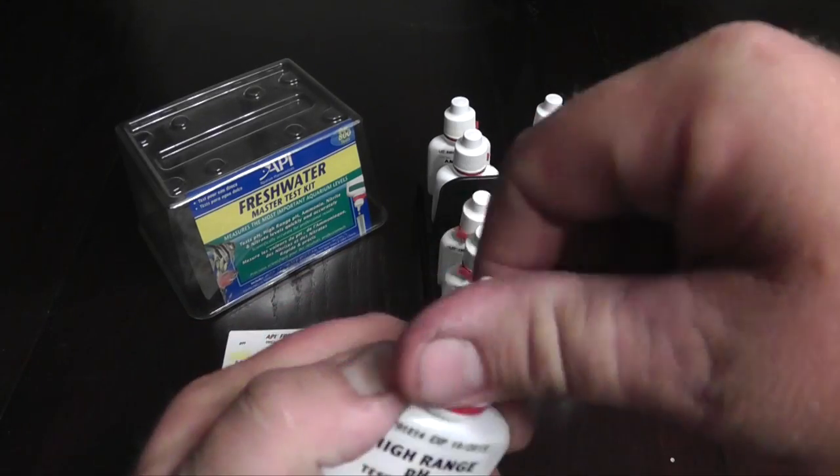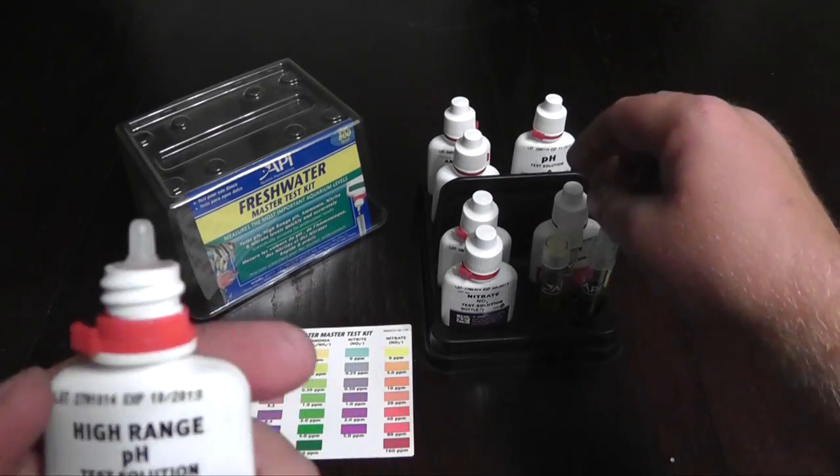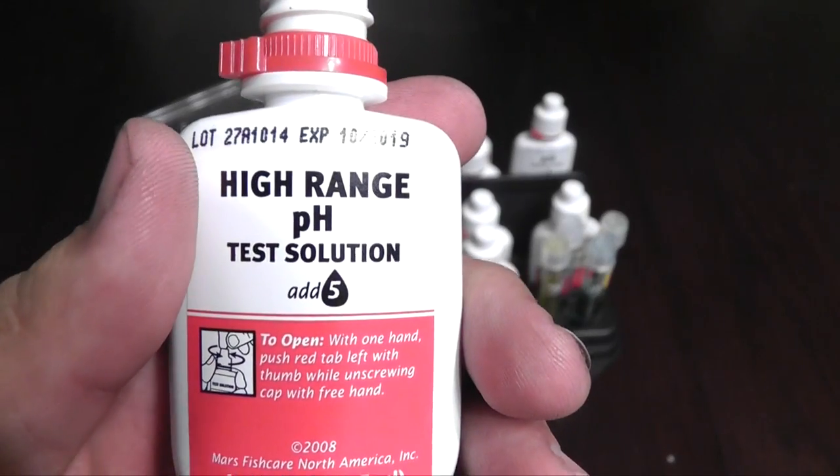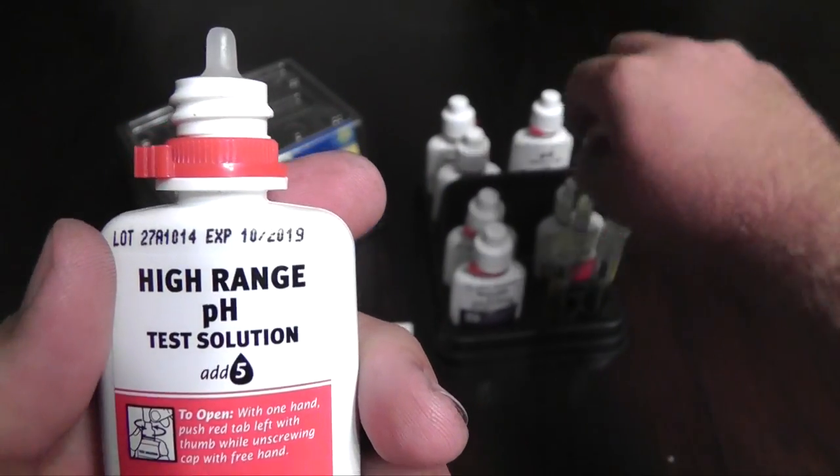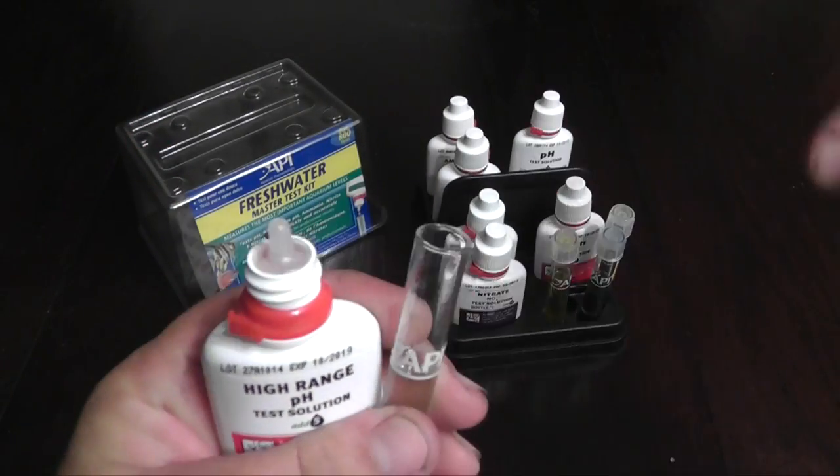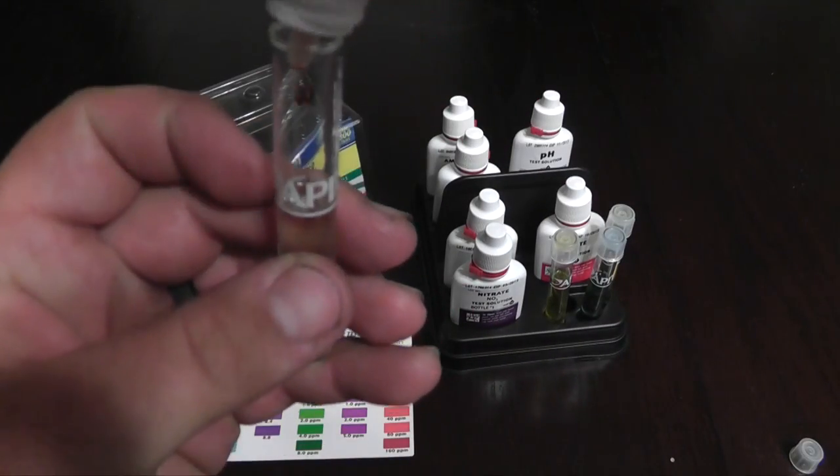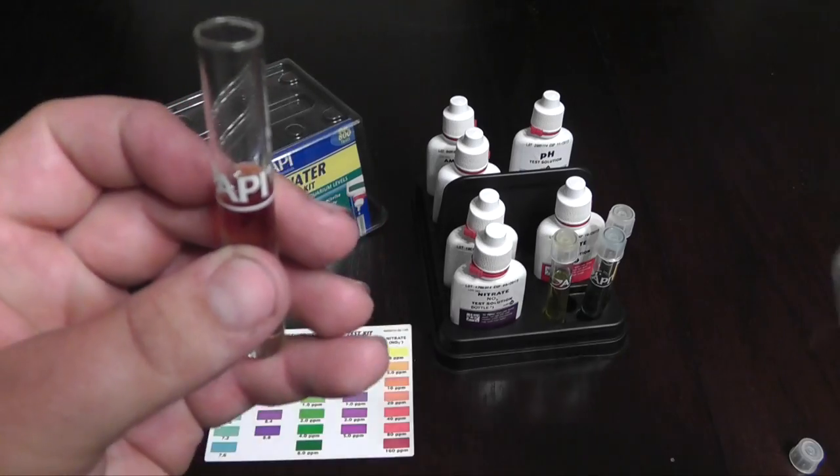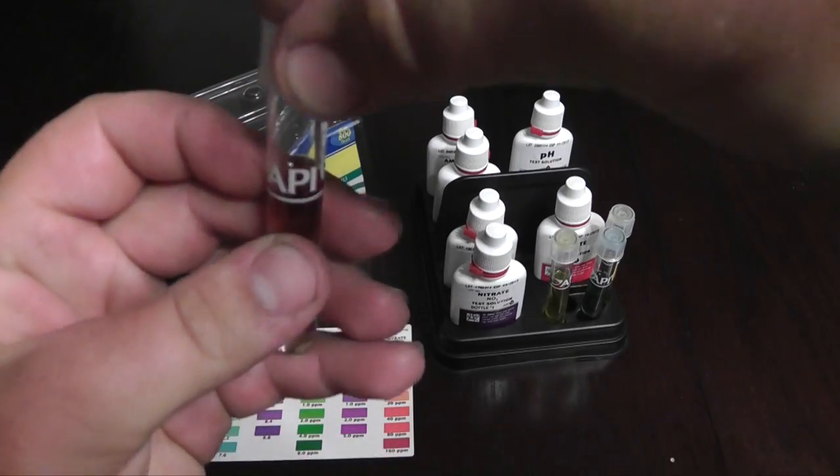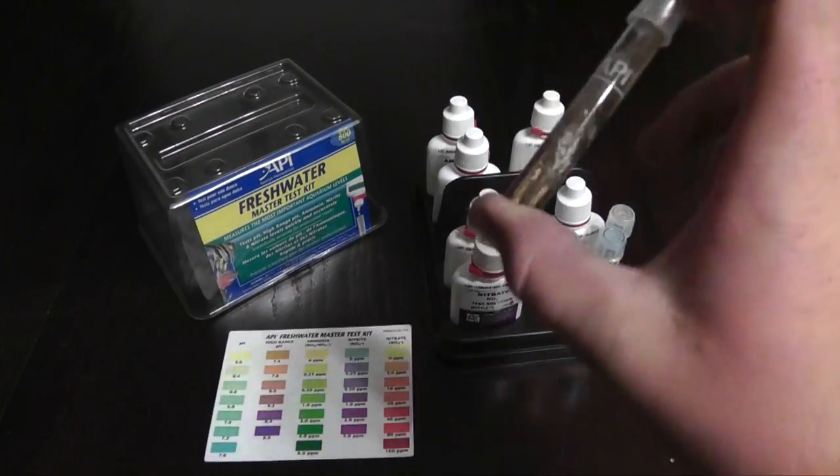Now we're going to test the high range pH using five drops. You can see right here on the camera. So we're going to open up the test tube. We're going to drop in five drops. And that is done. I cap that and shake it up.